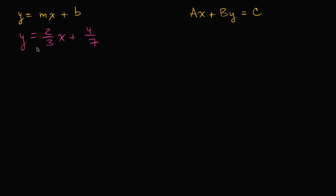So the first thing I would want to do is get rid of all of these fractions, and the best way to get rid of the fractions is to multiply by 3 and to multiply by 7. If you multiply by 3, you get rid of this fraction. You multiply by 7, you get rid of this fraction.